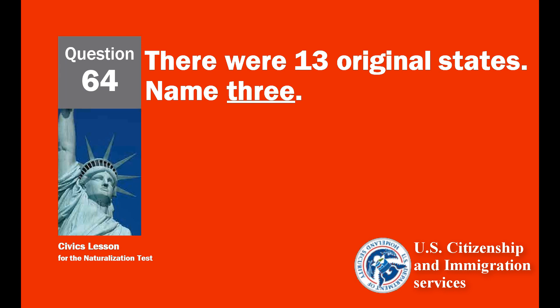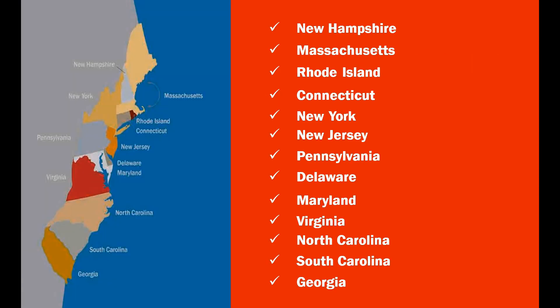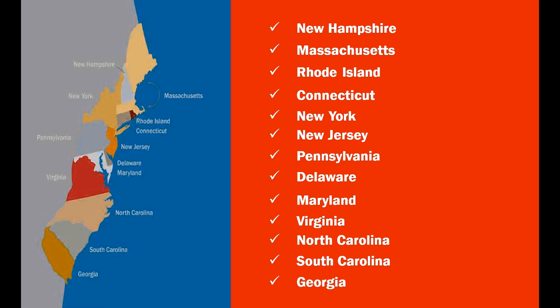There were 13 original states. Name three. New Hampshire. Massachusetts. Rhode Island. Connecticut. New York. New Jersey. Pennsylvania. Delaware. Maryland. Virginia. North Carolina. South Carolina. Georgia.